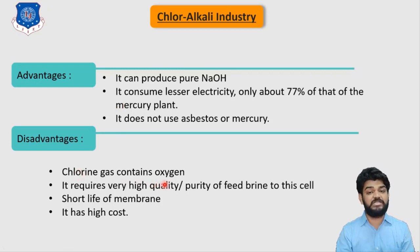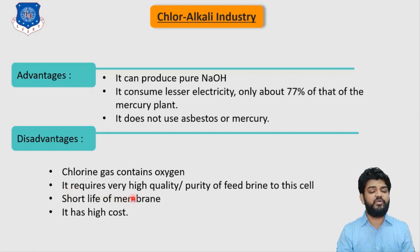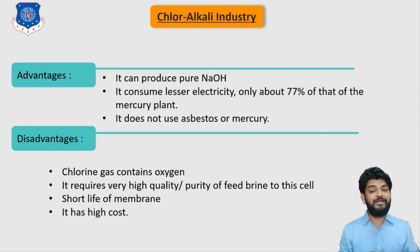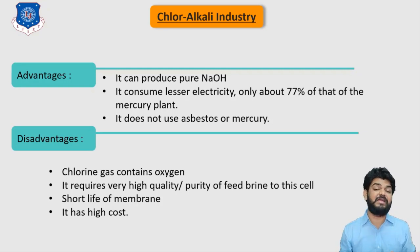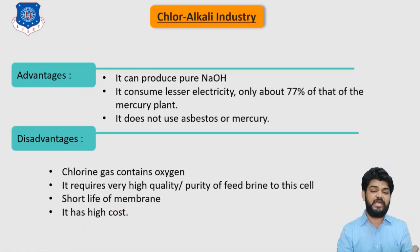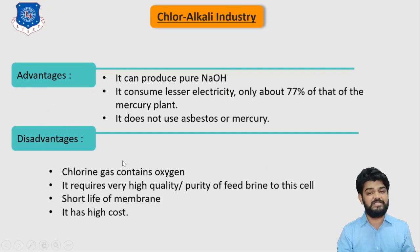The disadvantages of the membrane cell are that the chlorine gas contains oxygen, which is an environmental concern. It requires very high quality purified brine — the brine must undergo concentration, precipitation, filtration, and ion exchange to improve quality. The short life of the membrane is also a significant disadvantage, and the high cost of production is a major problem associated with this process.